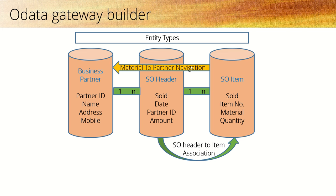Next is navigation. What is navigation? Here we have the entity Business Partner. We want to fetch the details of a business partner but we only have a material ID. Through this material code we want to find out who the partner is. So what we do is navigate: first we access the SO Header entity, passing the material ID, then we go to SO Header and select the partner ID, and from this partner ID we fetch the partner details from the Business Partner entity. This is called navigation — we are navigating from one entity to another.